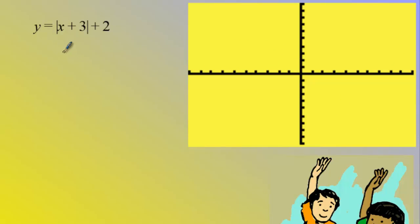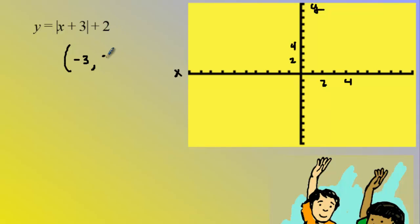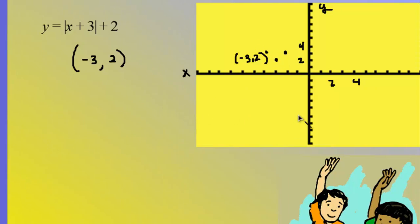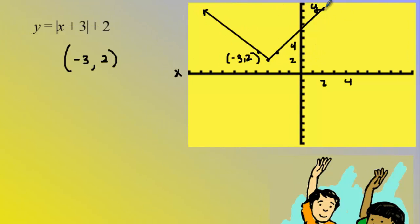Here we have the absolute value of x plus three plus two, so there's a horizontal shift and a vertical shift — that's it. The slope has no stretch or shrink and no reflection. The vertex is at negative three, two — it's the opposite of what I see horizontally and what I see vertically. There's no negative sign so it opens up, and the number next to x is a one so the slope is one. I'll draw the rays.